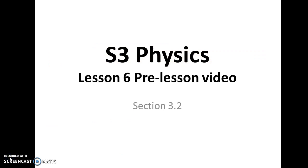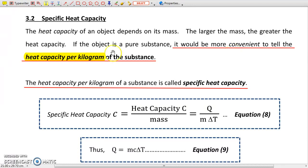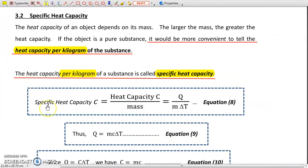Lesson 6 pre-lesson video. Section 3.2: Specific heat capacity. As you can see from the last question, it would be more convenient to talk about the heat capacity per kilogram of a substance. This is called specific heat capacity — it is the heat capacity per kilogram of the substance. We calculate it by dividing the heat capacity by mass. Note that we use a capital letter C to represent heat capacity, while we use a small letter c to represent specific heat capacity.